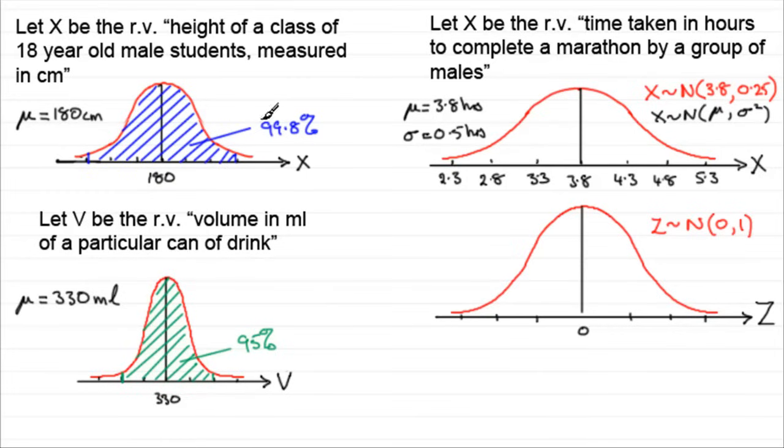Remember, 99.8% is within three standard deviations of the mean. Now this standard normal distribution is designed in such a way that we can map values from this distribution directly onto this one. It's done through a transformation. And that transformation, something that you're going to need to remember,